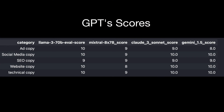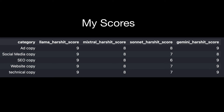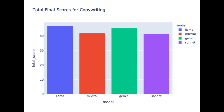Coming to copywriting — this was something that all the models did really well on. GPT scores showed Llama 3 again outperforming, with only the SEO copy scoring nine out of 10; all other copies were 10 on 10. Gemini also stood out for copy creation. For copywriting, I would pick Llama 3 70 billion, and if you want to fine-tune or use it for RAG, Llama 3 70 billion is my pick, with Gemini 1.5 as a close second.